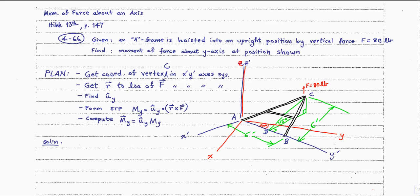Then let's get our position vector r out to the line of action of the force vector F. We can unitize it. We'll get a vector along the red y-axis and unitize it to get û_y. Having all of that information, we can do the scalar triple product: û_y dotted into r cross F, where r cross F is your moment vector. We can also find the vector M_y by multiplying the magnitude by that unitized û_y vector lying along the y-axis.